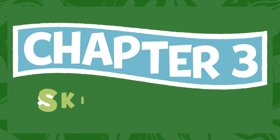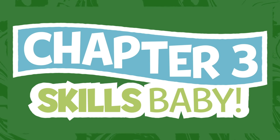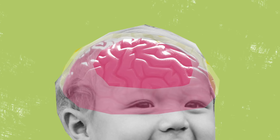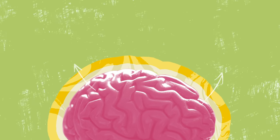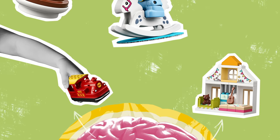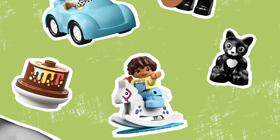Behind the design of every Duplo set, there's hours of child development research. The brain of a toddler is like a sponge, hungry for knowledge. At this stage of human development, learning mainly happens through handling objects and familiarizing yourself with the world around you.